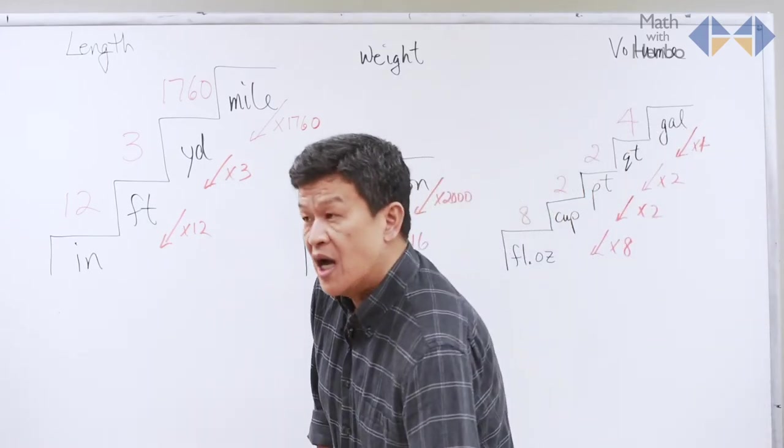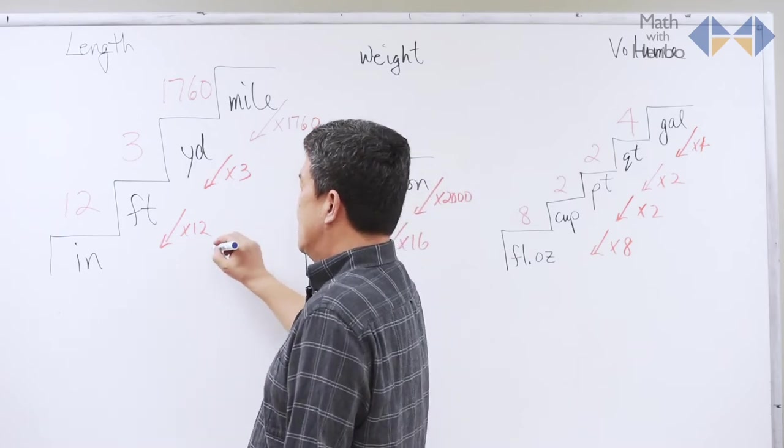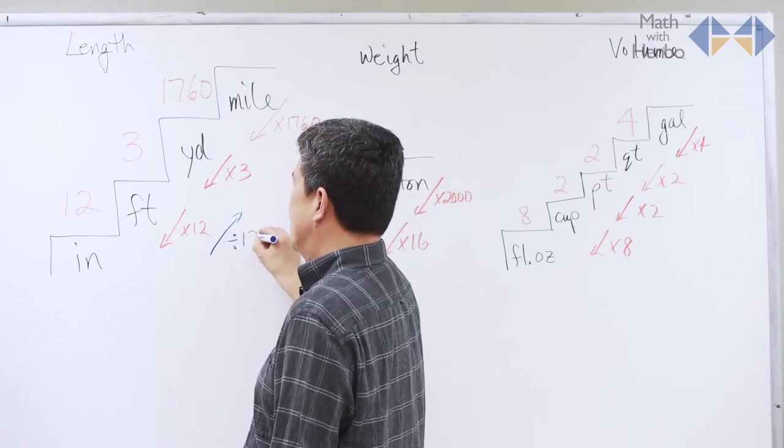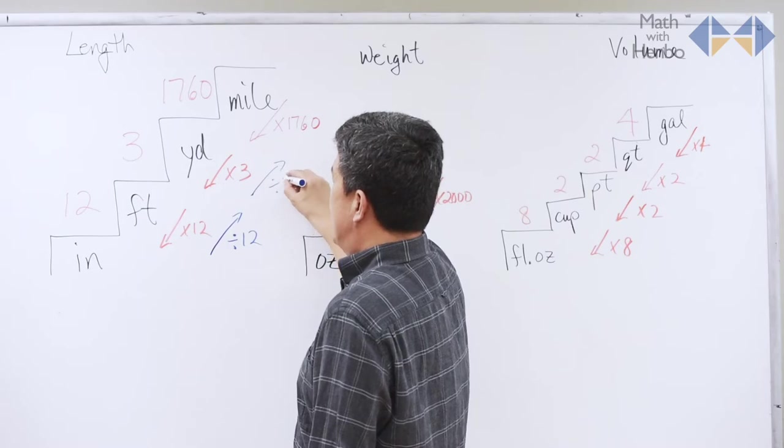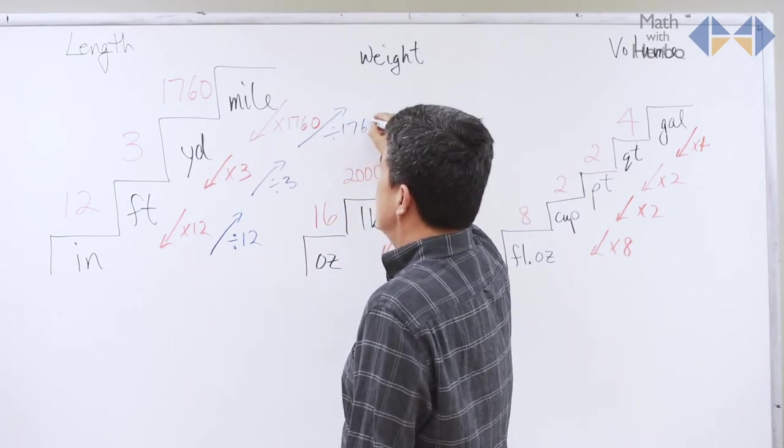If we're doing the other way, so for example, we're going from inches to feet. Reverse direction basically means the opposite operation on multiplication, which is divide. Divide by 12. Feet to yard, divide by 3. And yard to mile, divide by 1,760.